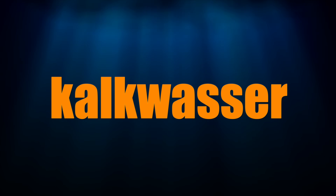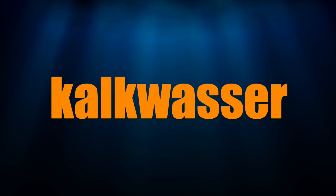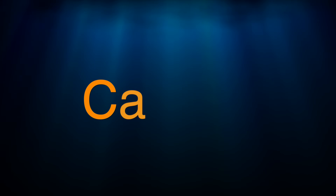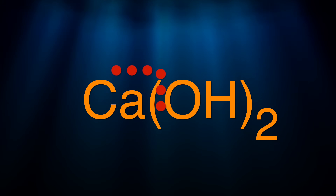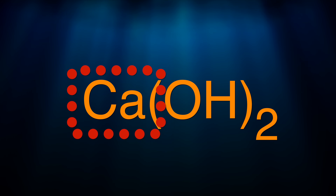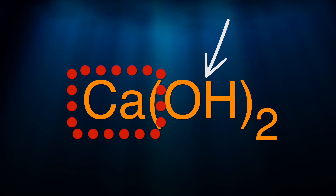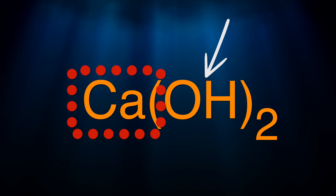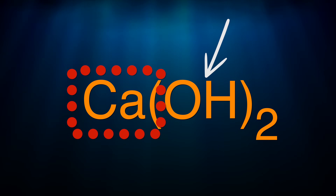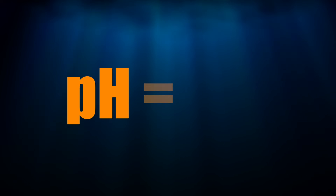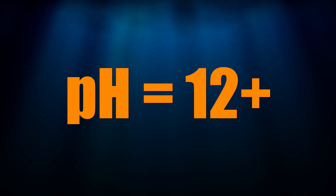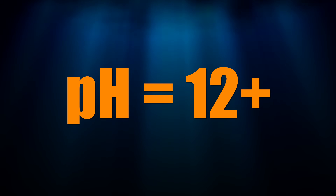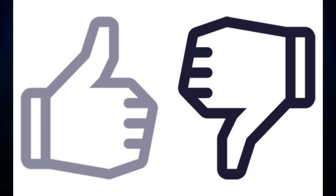Calc is short for kalkwasser, which is German for lime water. Calc's chemical compound is CaOH2, which means it's got calcium in it and hydroxide, which is known around the reefing world as alkalinity. When dissolved in freshwater, it makes the resulting solution have a high pH of 12+. That's why it's good for raising pH levels. This high pH level can be good and bad, and I'll get into that later in the show.